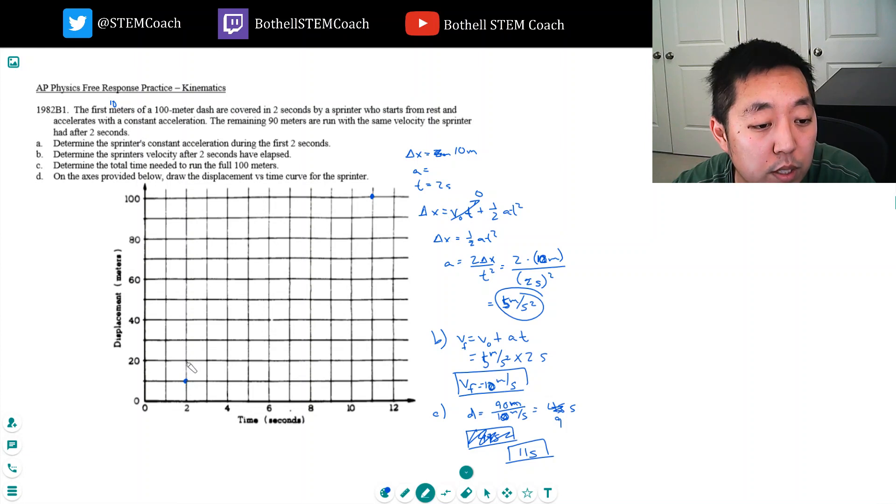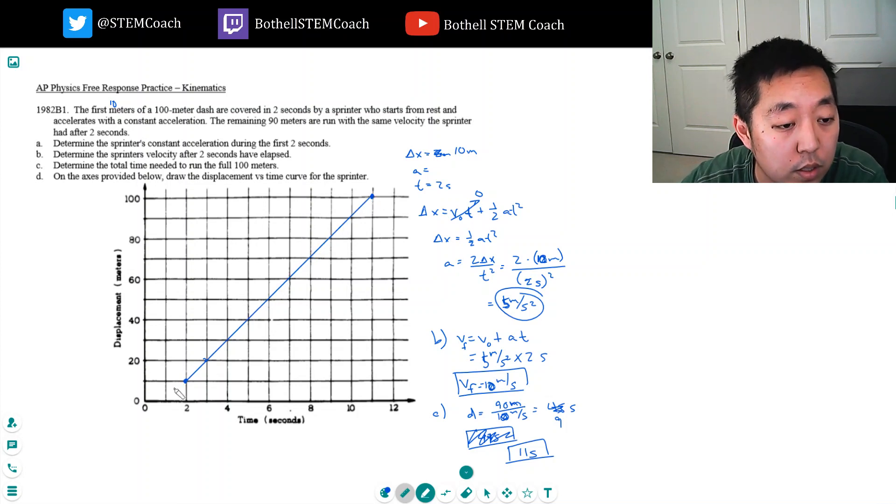Does that make sense? It goes up like that, so I'll draw that line. And then from there to there, it's kind of like constant acceleration, kind of like that.